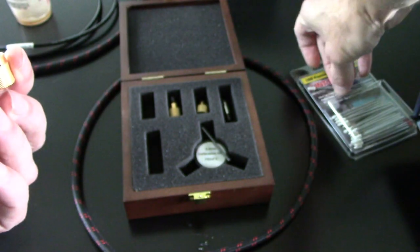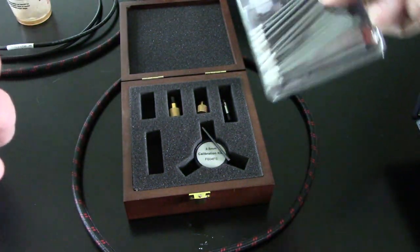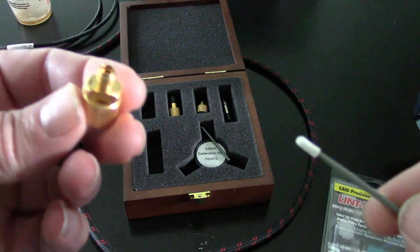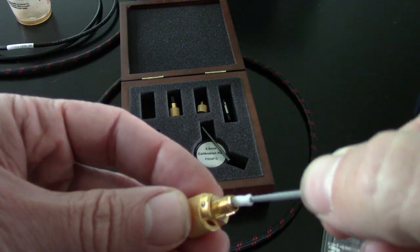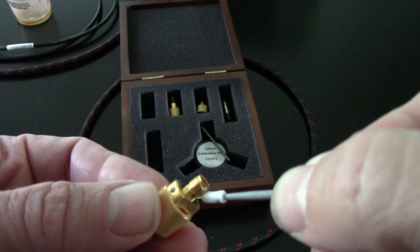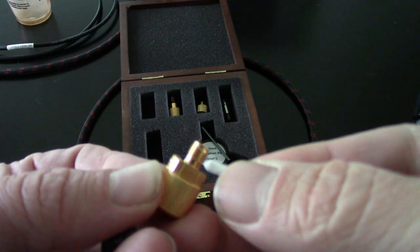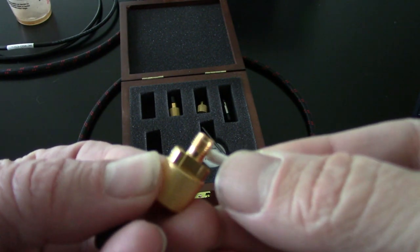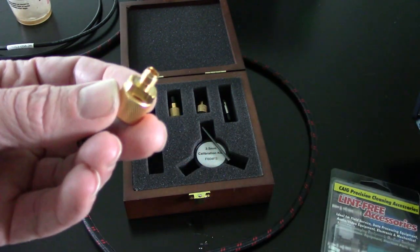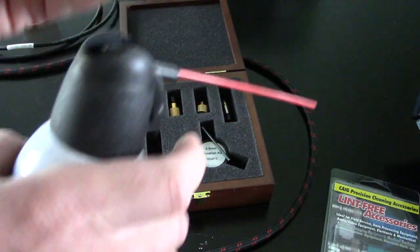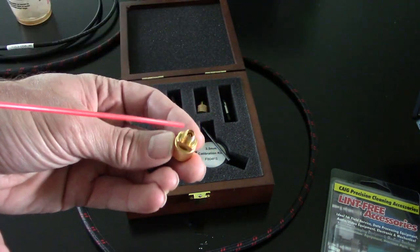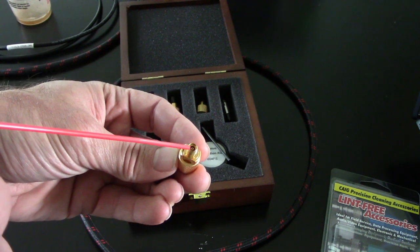Here we've got some lint-free swabs. We're going to put some isopropyl alcohol on and we're going to swab around the interior of that connector, that center conductor, and also the threads. We could also use the tip of the swab to get into the threads. After we've cleaned we can take our compressed air and give that a quick shot just to blow off any residue from the IPA and get any dust off of it.